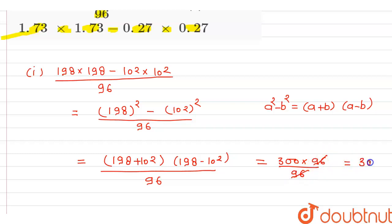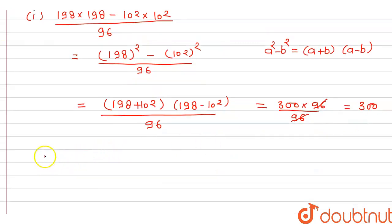And the second one is 1.73 x 1.73 - 0.27 x 0.27. So here we can also write it as 1.73 whole square minus 0.27 whole square.